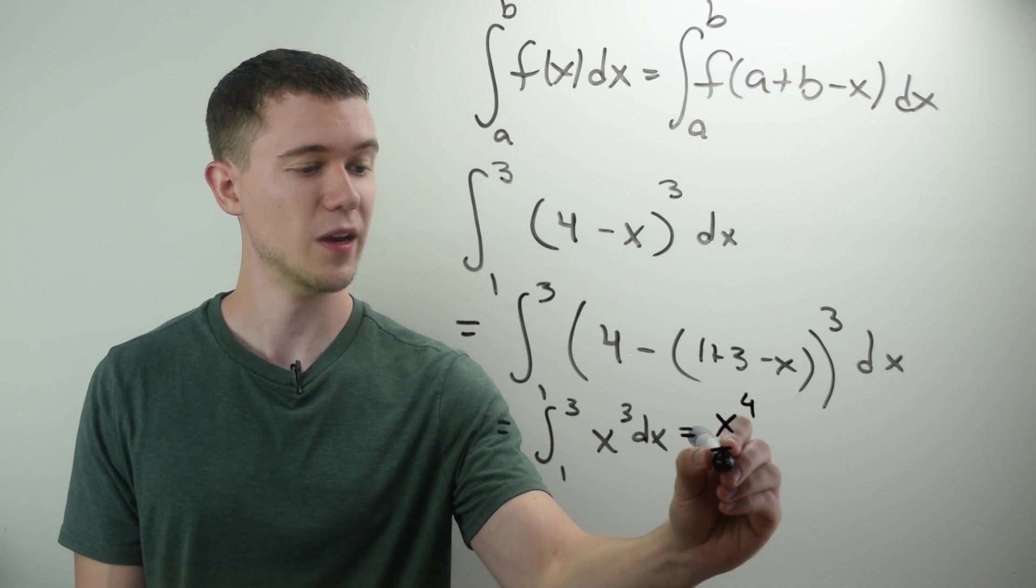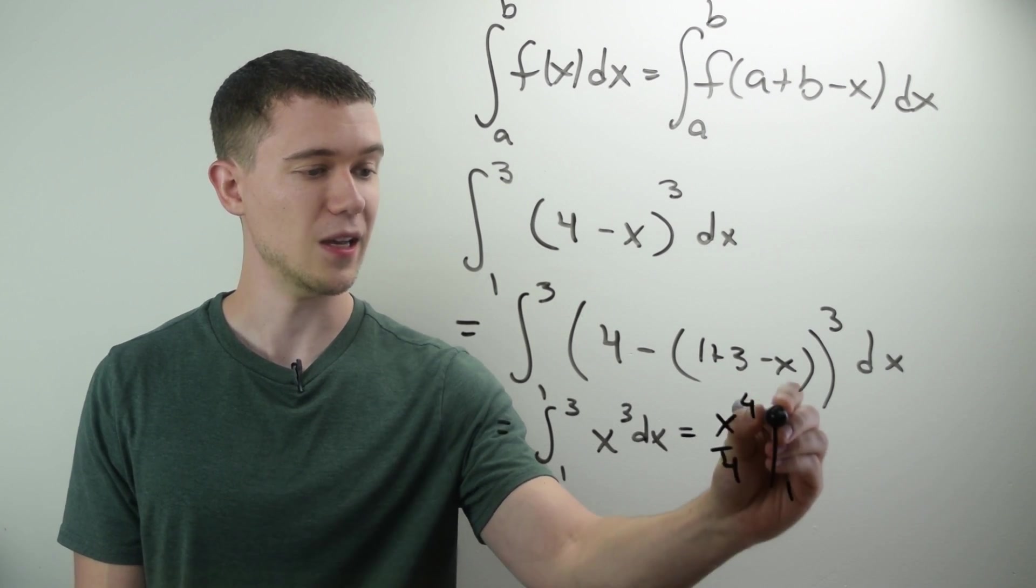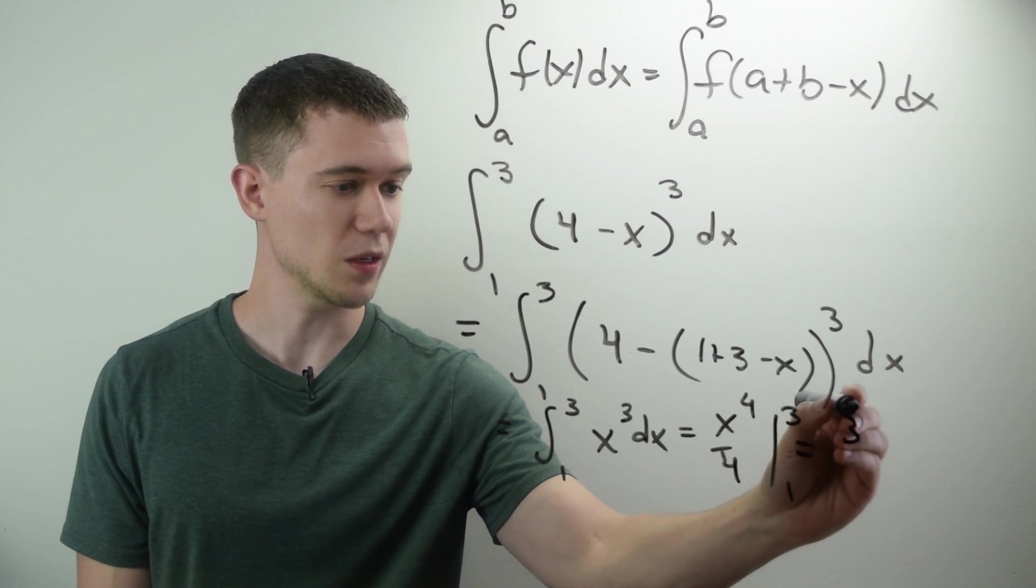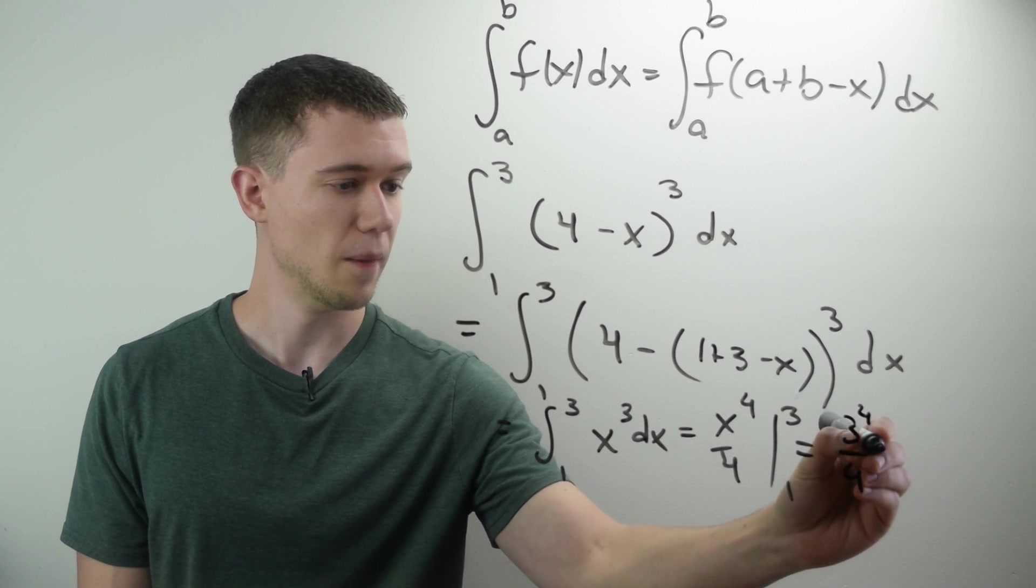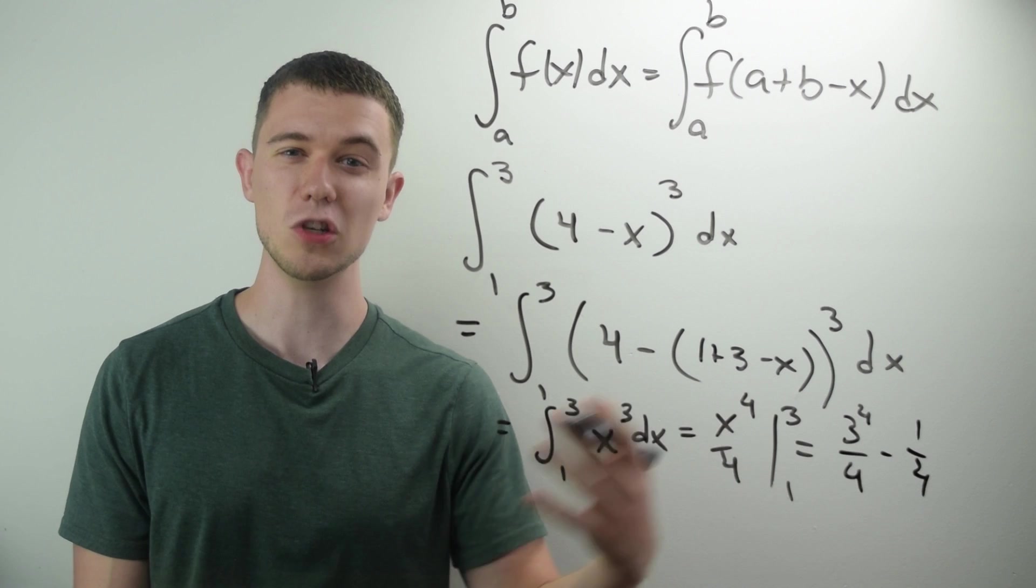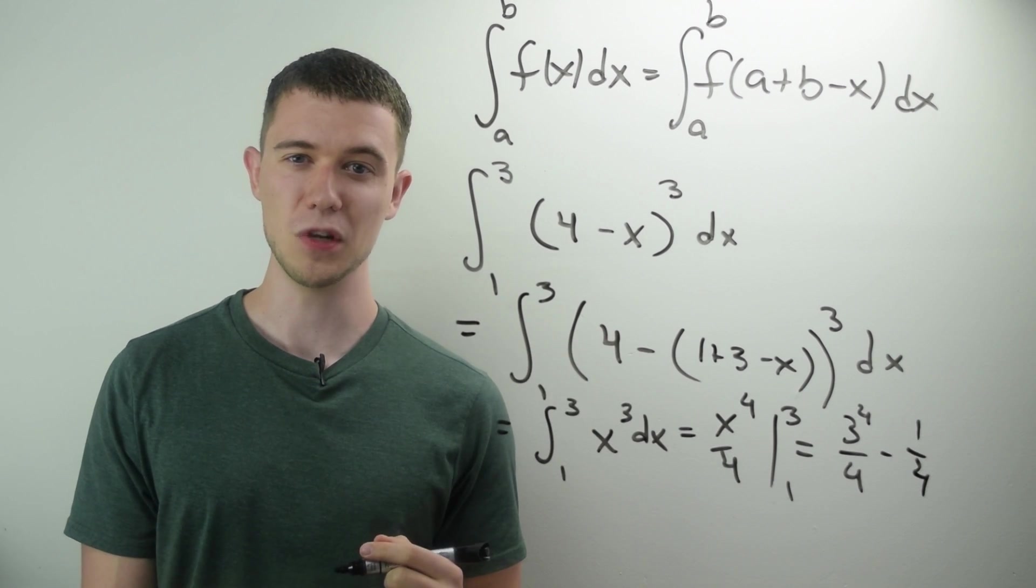We just add 1 to the power, divide by the new power, evaluate from 1 to 3. And I think that's just going to be 3 to the 4th over 4 minus 1 to the 4th, whatever that is. I don't really care. My job is to show you the trick. There's another one for you to use.